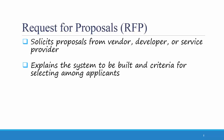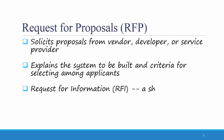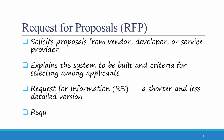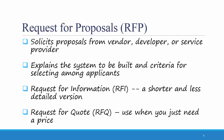The idea is that you write up a document similar to the system proposal from the analysis phase and send it out to one or more vendors, developers, or service providers, asking them to return a proposal of how they would complete the work and at what cost. A Request for Information, or RFI, is a shorter and less detailed version of an RFP. A Request for Quote, or RFQ, is what you use when you just need a price. RFQs are used more commonly when purchasing prepackaged software, while more detailed RFPs are used when outsourcing work to a service provider.